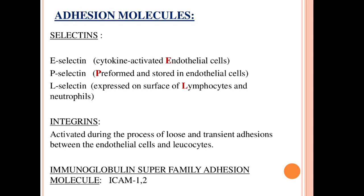E-selectin is expressed on cytokine-activated endothelial cells. P-selectin is preformed and stored in endothelial cells. L-selectin is expressed on the surface of lymphocytes and neutrophils. Next, integrins are activated during the process of loose and transient adhesion between endothelial cells and leukocytes, helping them attach firmly to the endothelial cells.